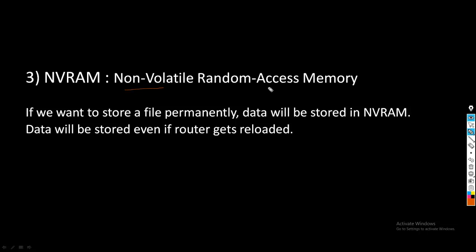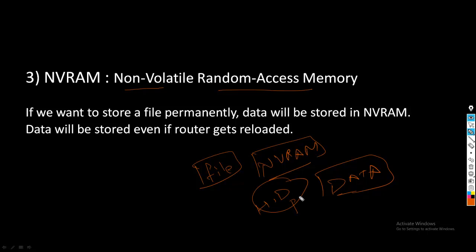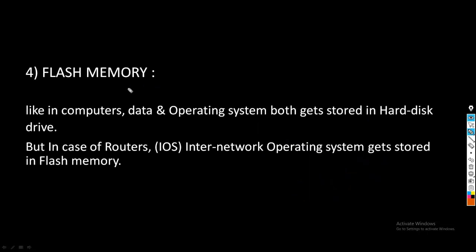The next component of router is NVRAM, that is Non-Volatile Random Access Memory. If we want to store a file or any data permanently, that data will be stored in NVRAM. Data will be stored in NVRAM even if the router gets reloaded. In computers, we save our data permanently in hard disk — the same way, if you want to store a file permanently in a router, data will be stored in NVRAM.